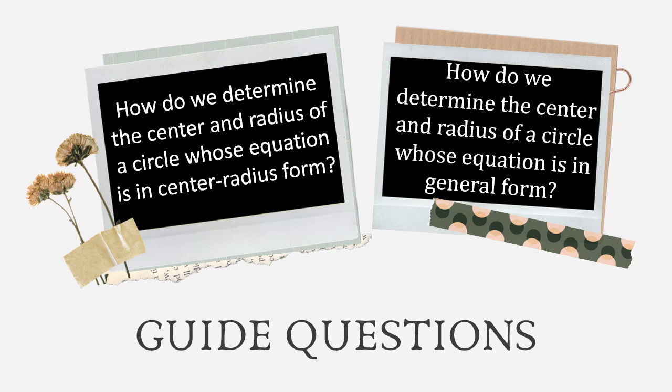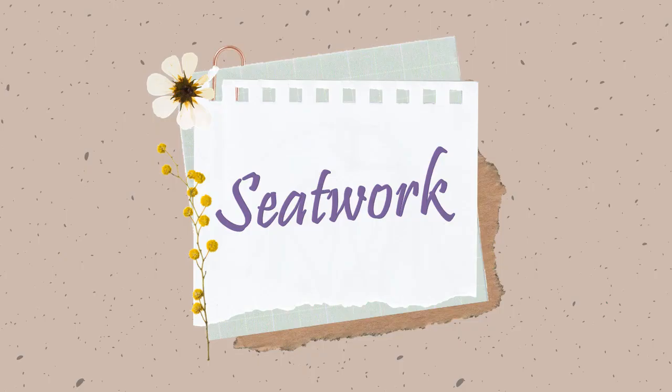I'm going to share the following guide questions that hopefully you will be able to answer after watching this video. Before we start, let us have a short overview of our topic in relation to our previous video lesson. What we are going to do is the vice versa — before, in our first day on equation of a circle, we determined the equation given the conditions. Now, the equation is already given and we are going to find the coordinates of the center and the length of the radius. It would be a reverse process only.